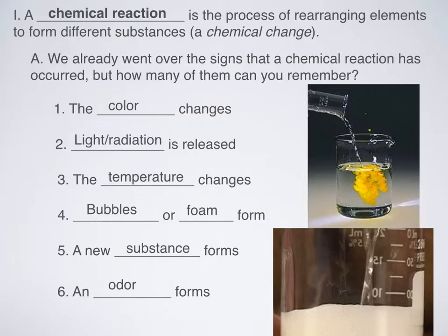What is a chemical reaction? We defined chemical change in Unit 2, and a chemical reaction is basically a chemical change. It is the process of rearranging elements to form different substances.